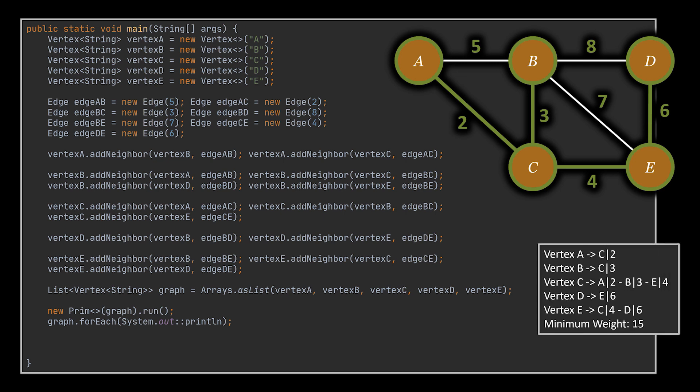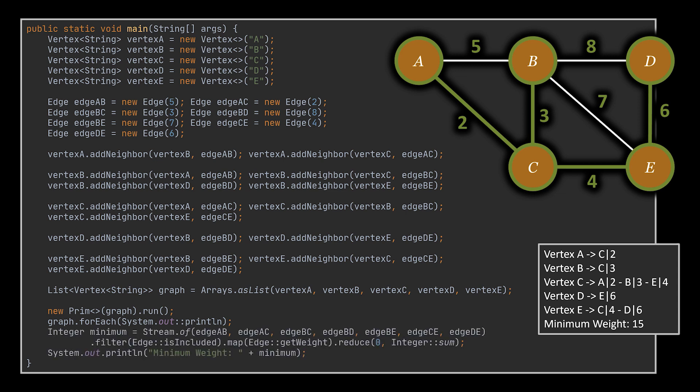As you can see each vertex tells us which neighbor it is connected to in the minimum spanning tree we generated, and the results are exactly as expected and similar to what we got at the start of the video. If you want to calculate the minimum weight of the tree we spanned, all you have to do is generate a stream of all the edges included in that spanning tree, map them to their weight, and sum the values of that stream. Also, as I expected the weight we got here matches with our previous results.